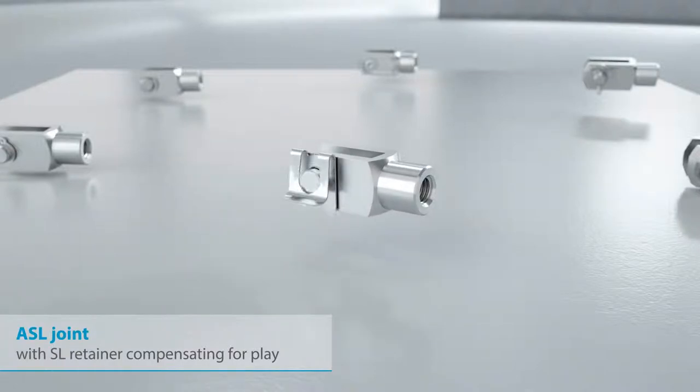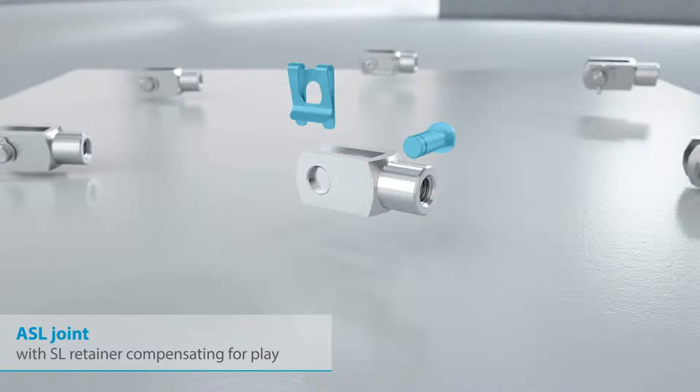Alternative to the AKL joint, an SL retainer can also be used for fixing. It also compensates for play and is mounted and dismounted in a similar way to the KL retainer. One great advantage of the SL retainer is the plate that surrounds the end of the bolt and provides additional protection against axial detachment.